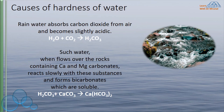What is the cause of hardness of water? Rain water absorbs carbon dioxide from air and becomes slightly acidic by forming carbonic acid. When such acidic water flows over rocks containing calcium and magnesium carbonates, it reacts slowly with these substances and forms bicarbonates which are soluble. For example, calcium carbonate present in rocks is not soluble in water, but water containing carbonic acid converts it into calcium bicarbonate, which is soluble in water.